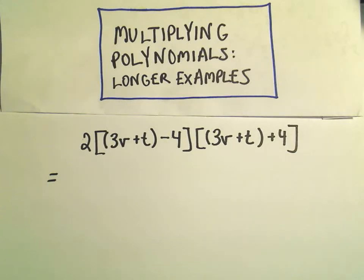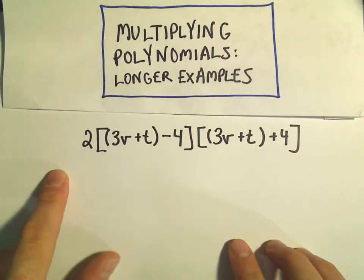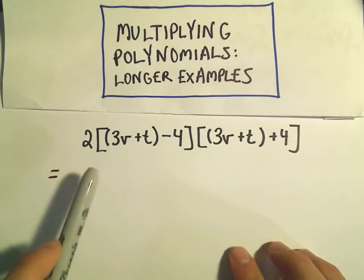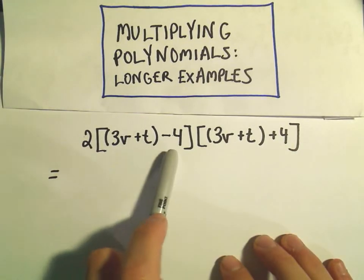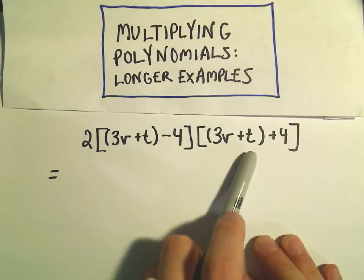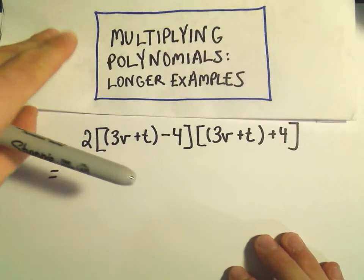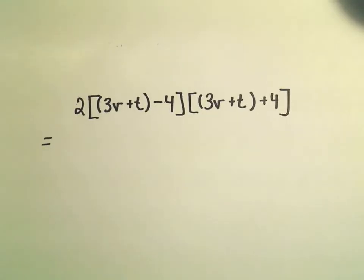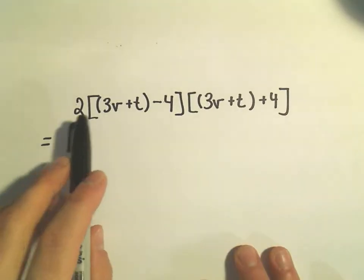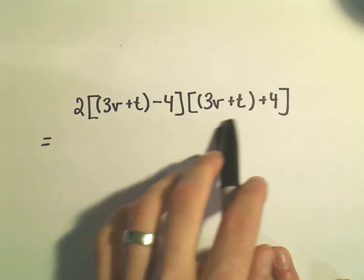Okay, in this video I want to talk about multiplying polynomials, just a more tedious example here. In this example we're going to take 2 times 3v plus t minus 4 times 3v plus t plus 4. There are a couple different ways we could do this. You could distribute the 2 to either the first set of brackets or the second set.